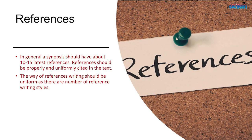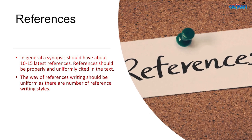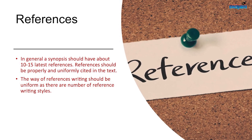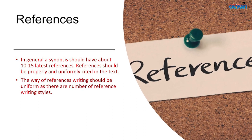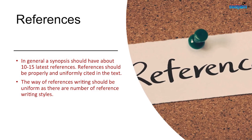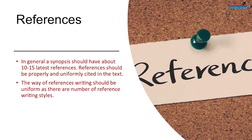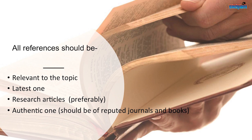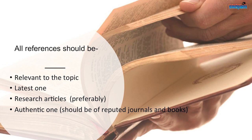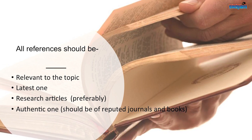Now moving to the references. A synopsis should have limited references depending upon the prescribed guidelines. In general, a synopsis should have about 10 to 15 latest references. References should be properly and uniformly cited in the text, and the style should be uniform. All references should be relevant to the topic, latest, authentic, and from reputed journals and books. Focus on what tips we have given in the text for synopsis.